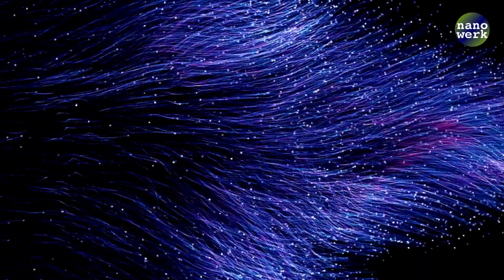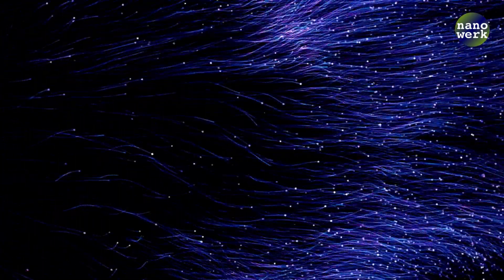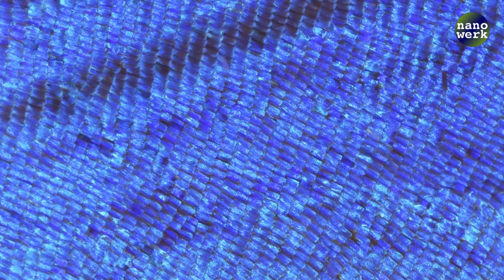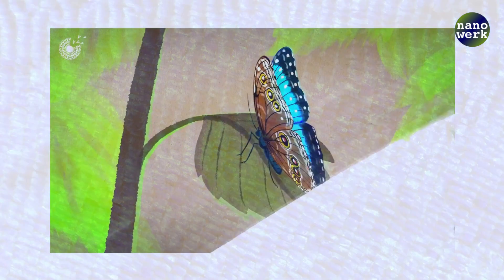An intriguing example of this concept in nature is the phenomenon of structural colors. Unlike pigments which absorb certain colors and reflect others, structural colors are created by the way light interacts with micro and nanostructures on a surface.